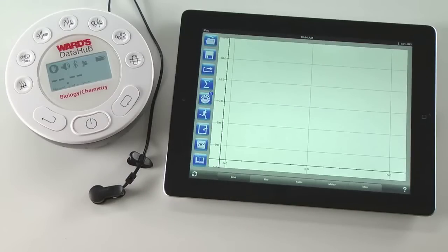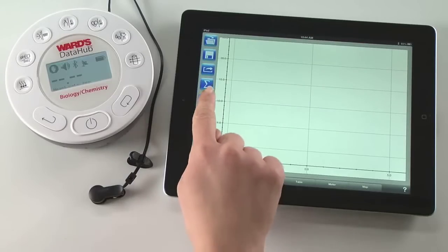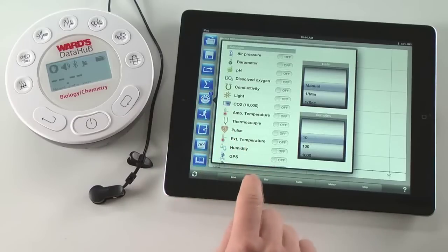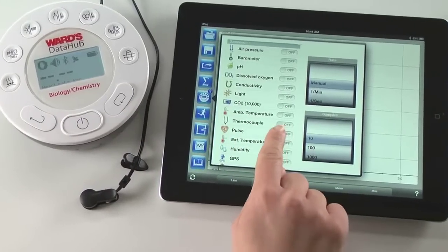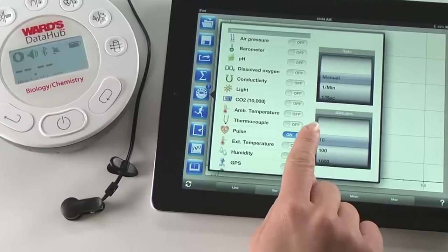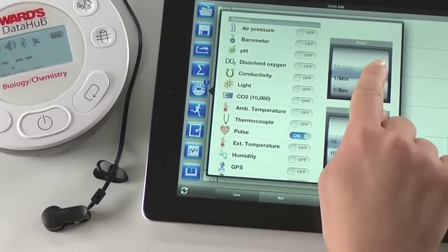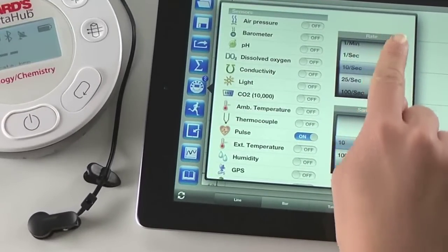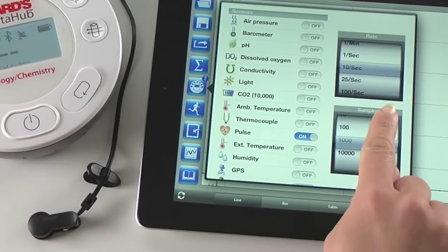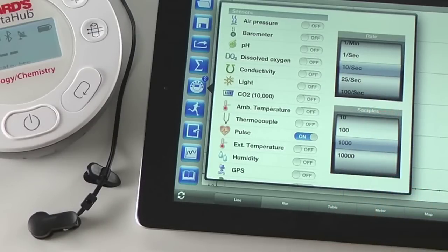First, open the setup screen on the Ward's DataHub analysis software on your iPad. Next, select the heart rate sensor. Then set it to measure at 10 samples per second for one thousand samples. Now we're ready to start the experiment.